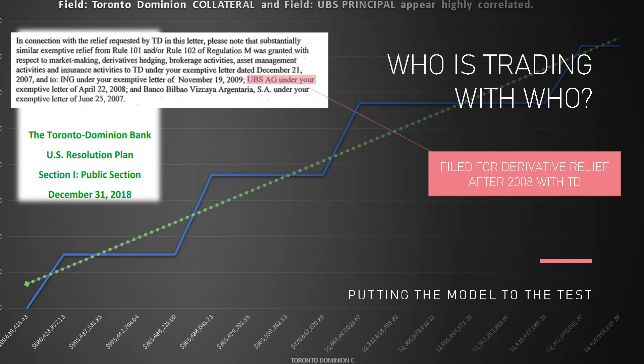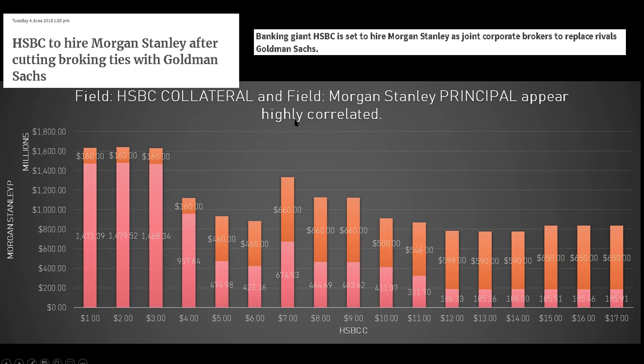Derivatives are still the problem. Could it be that between 2009 and today they're just now sorting out their problems? Absolutely. But do we know 100%? Not quite. Next: HSBC and field Morgan Stanley principal appear highly correlated. To reiterate — collateral is what you give up when you want to borrow, and then you swap for principal. So if you're borrowing, you have the principal; if you're the lender, you have the collateral. So HSBC collateral and field Morgan Stanley principal appear highly correlated.